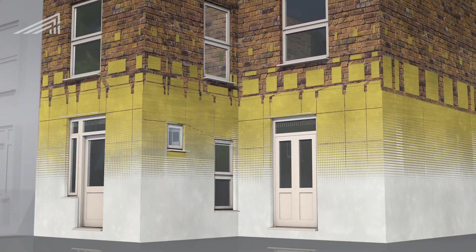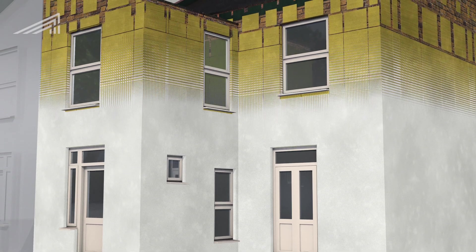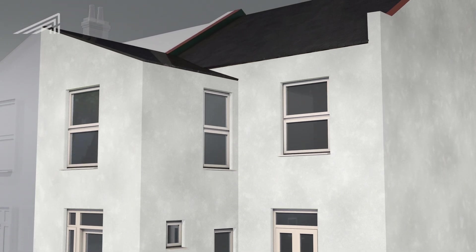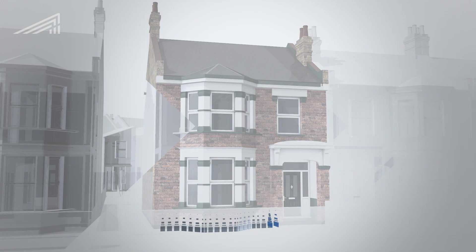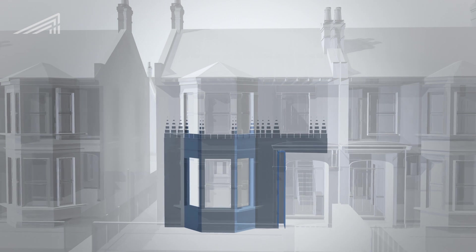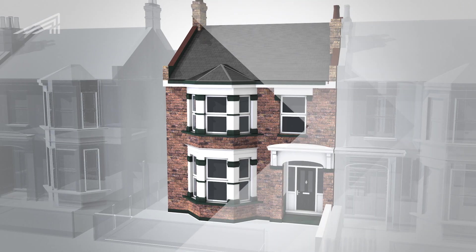We insulated the external walls, fixing a layer of rock wool, then covering it with a special render. It was essential to preserve the Victorian brick facade. So instead of using external insulation on the front of the property, we applied it internally.